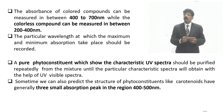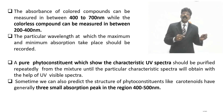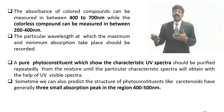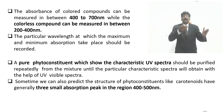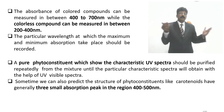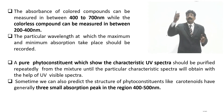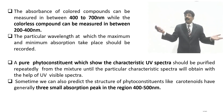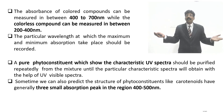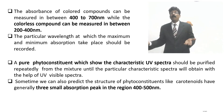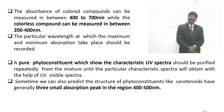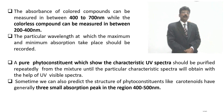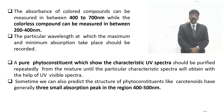A pure phytoconstituent showing characteristic UV spectra should be purified repeatedly from the mixture until a particular characteristic spectrum is obtained. Sometimes the structure of phytoconstituents can be predicted — for example, carotenoids generally show three small absorption peaks in 400 to 500 nanometers, because carotenoids have the structure of vitamin A with conjugated double bond systems extending from a ring structure, with multiple conjugated double bonds absorbing up into the visible region.